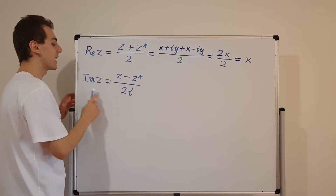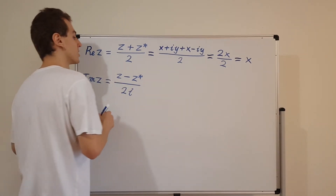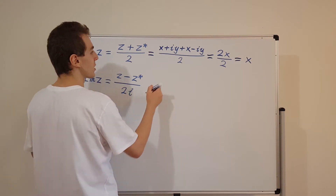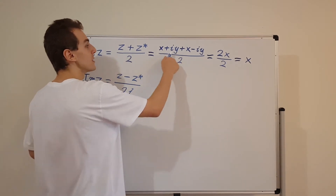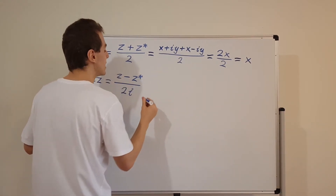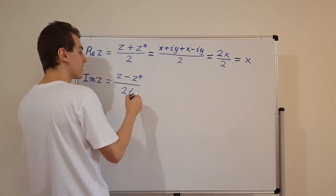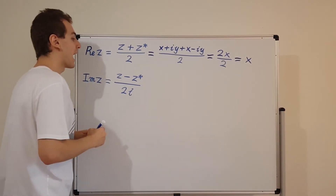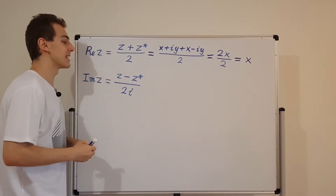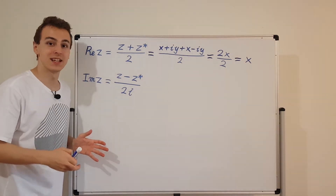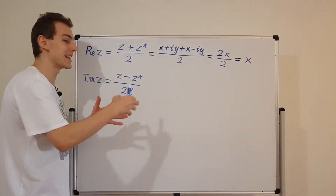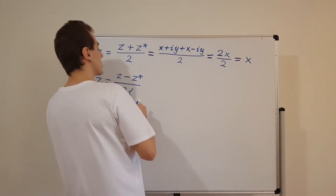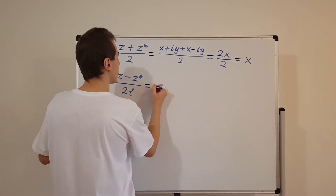Now let's verify the expression for the imaginary component. We're going to substitute in the Cartesian form again, because it's very useful for addition and subtraction. Subtraction is just a special type of addition where you're adding the additive inverse — the negative version of a number.